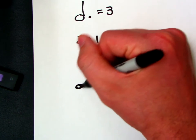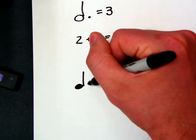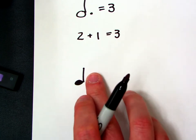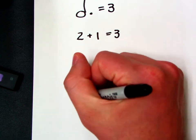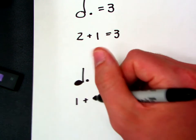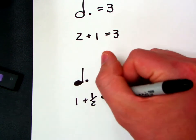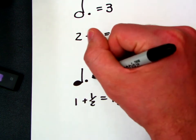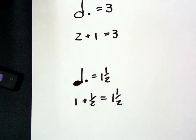Alright, now if we do it again with a different type of note, just so you can see it. A dotted quarter note, for example. If we cover up the dots, quarter note is worth one. And then we need half of one, so that's half. So a dotted quarter note equals one and one half.